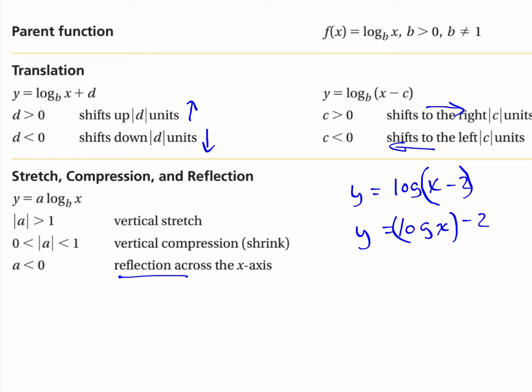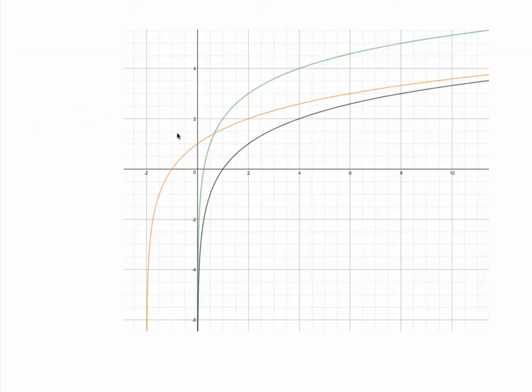Let's look at what this looks like on a graph. The black curve is y equals log base 2 of x. The orange curve is log base 2 of (x plus 2). This is a horizontal shift to the left 2 units.